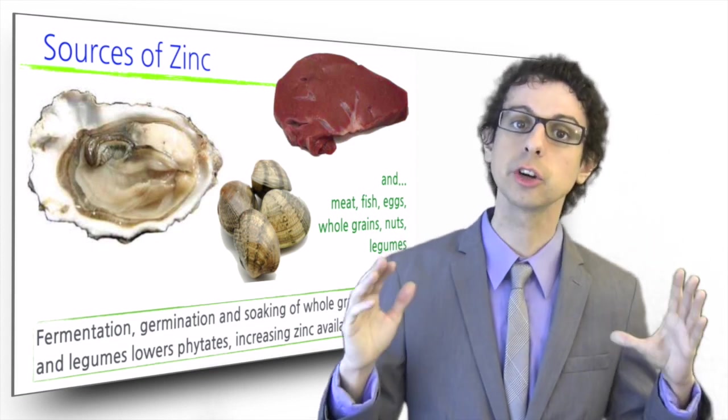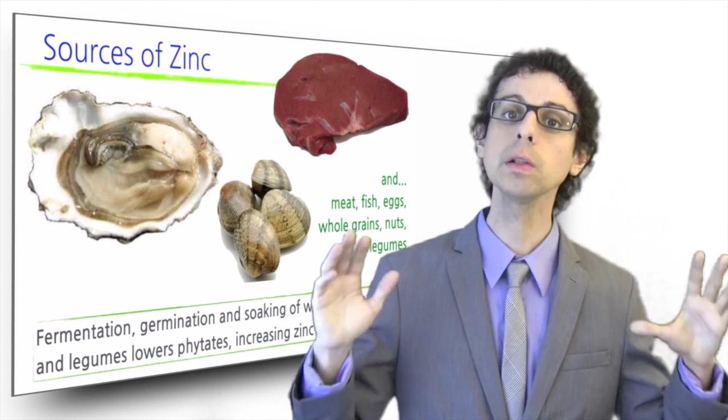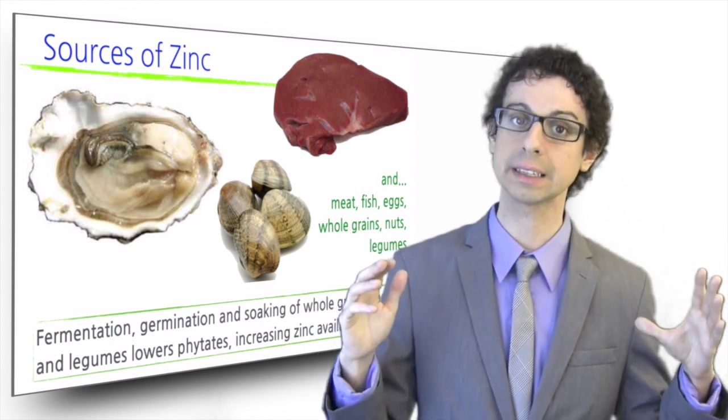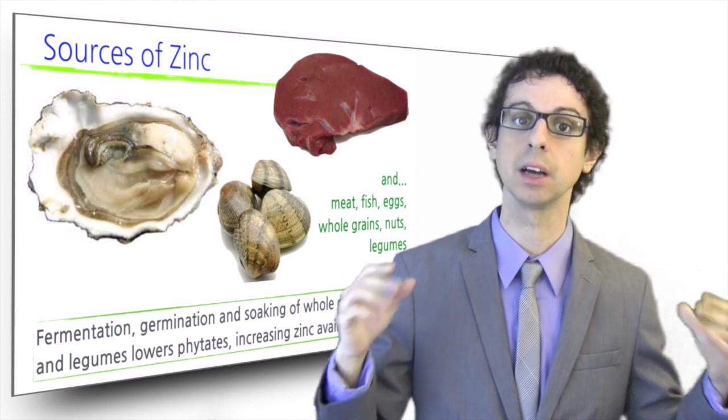Fermentation, germination, and soaking of whole grains, seeds, and legumes all result in partial enzymatic degradation of phytate, thus increasing zinc availability for absorption.